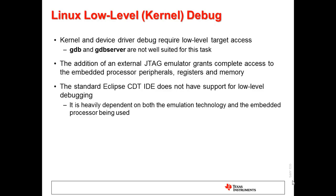Linux kernel debug is for those needing low-level target debug visibility. It is the environment needed by people developing drivers and such. GDB does not have the capability to effectively provide this low-level visibility. This is where a JTAG emulator is needed. Access to the target processor peripherals, registers, and memory is available through a JTAG emulator. The standard Eclipse IDE does not have support for JTAG debugging since support for this is heavily dependent on both the emulation technology and the target device being used.